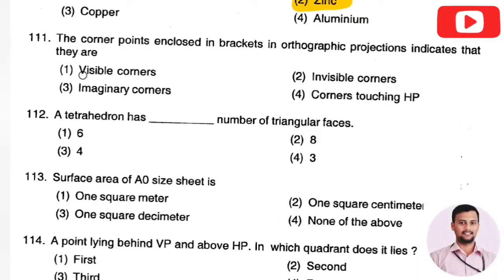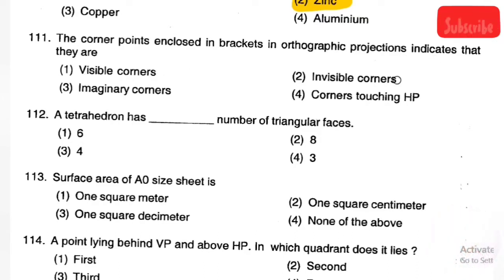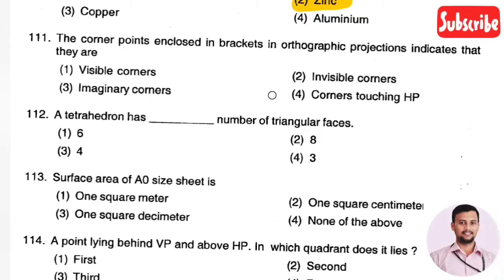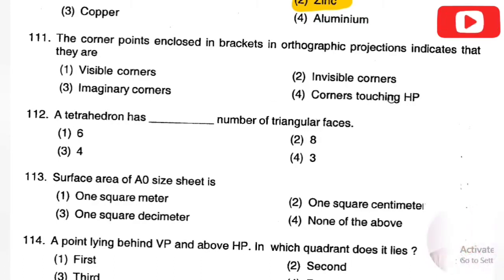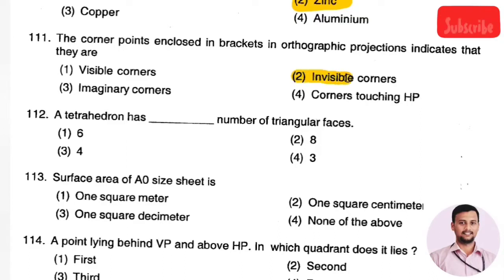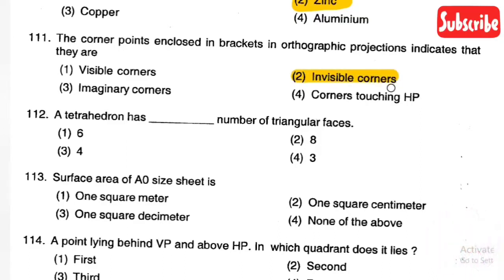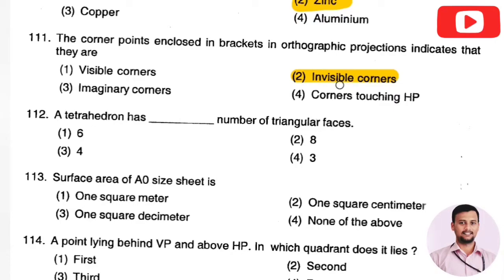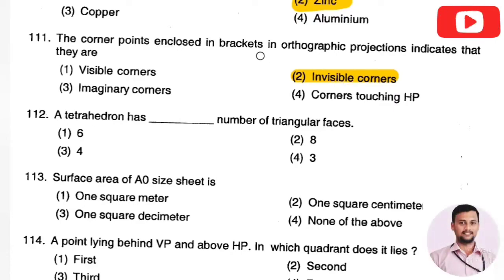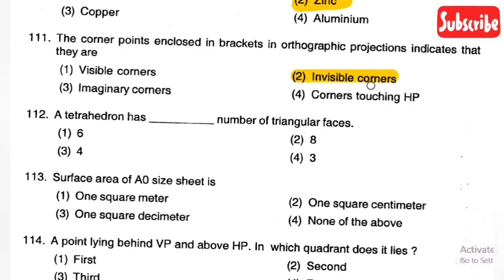The next question: corner points enclosed in brackets in orthographic projection indicate that they are — Option 1: visible corners, Option 2: invisible corners, Option 3: imaginary corners, Option 4: corners touching the VP. The right answer is Option 2, invisible corners. Points enclosed in brackets represent invisible corners.